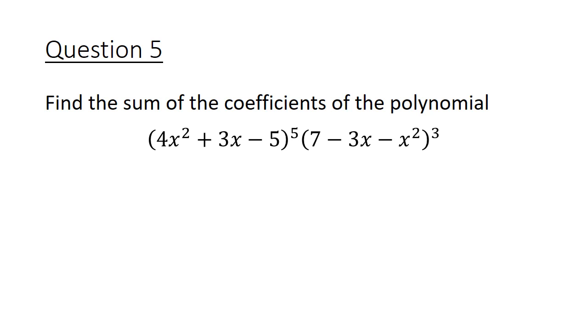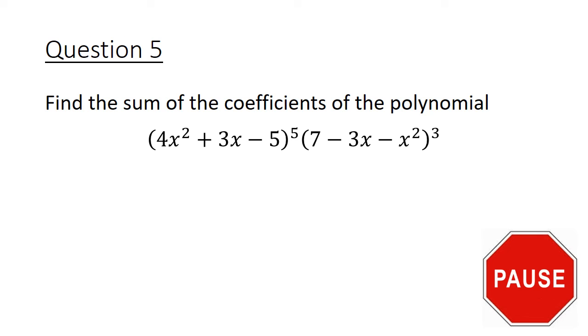Question number 5. Find the sum of the coefficients of the polynomial (4x squared plus 3x minus 5) raised to the power of 5 multiplied by (7 minus 3x minus x squared) to the power of 8 cubed. Pause the video here and give this question a good try.